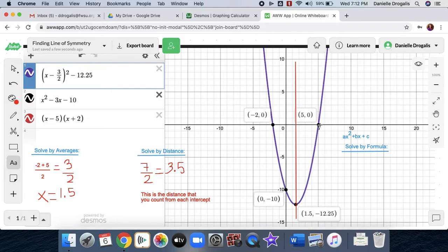If you are at 5, you count three and a half units toward the other point. You go one, two, three and a half, and right away you land at 1.5. So this is a different way to think about how the line of symmetry is 1.5.